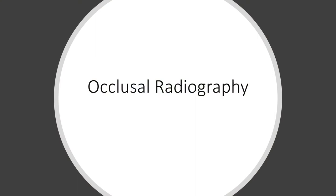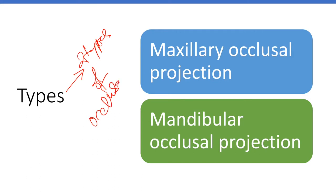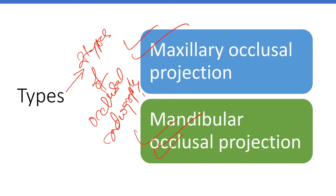In this video we will be talking about occlusal radiography. There are two types of occlusal radiography: maxillary occlusal projection and mandibular occlusal projection.